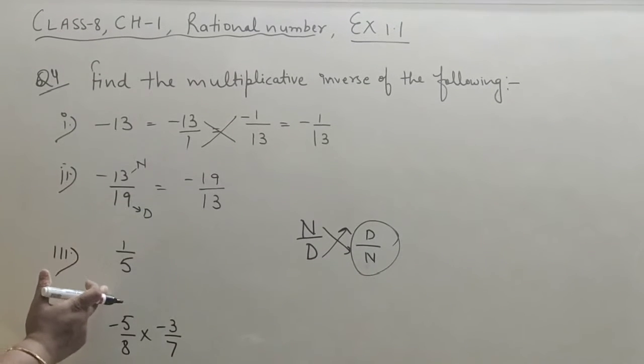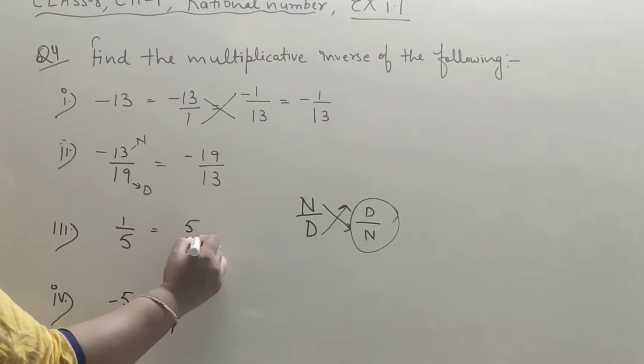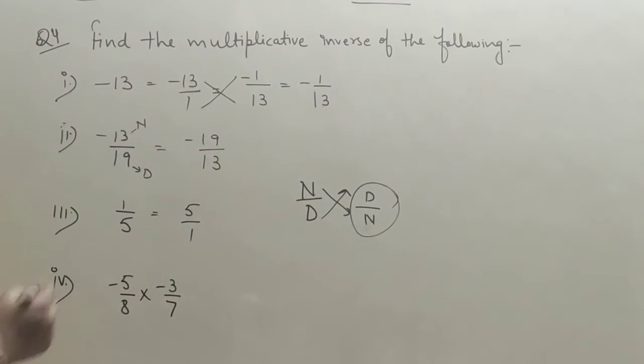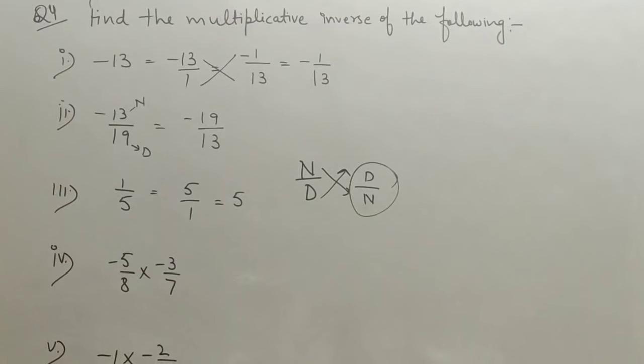Third part is 1 upon 5. So the answer is 5 upon 1. We can write 5 upon 1 as just 5.